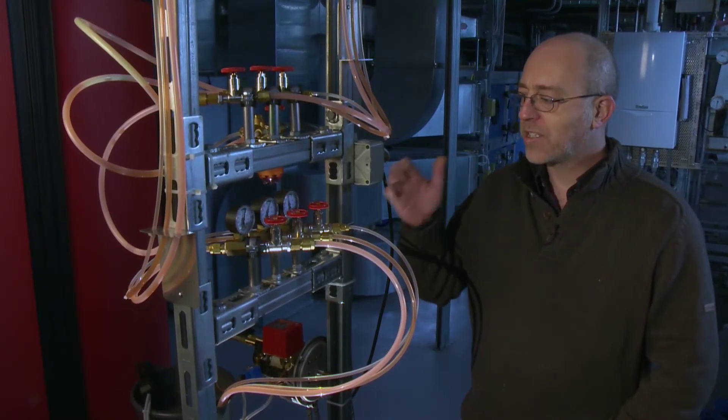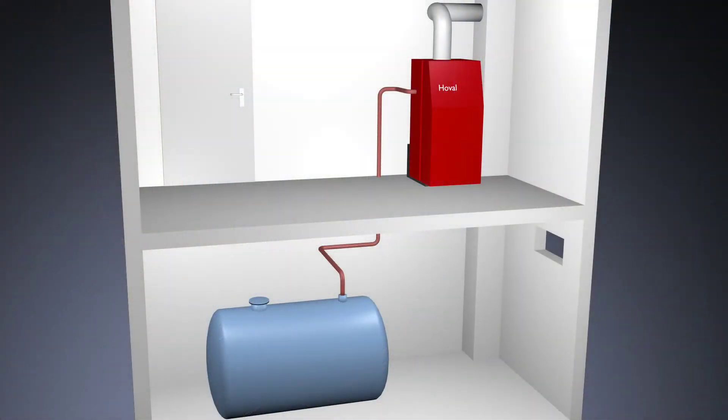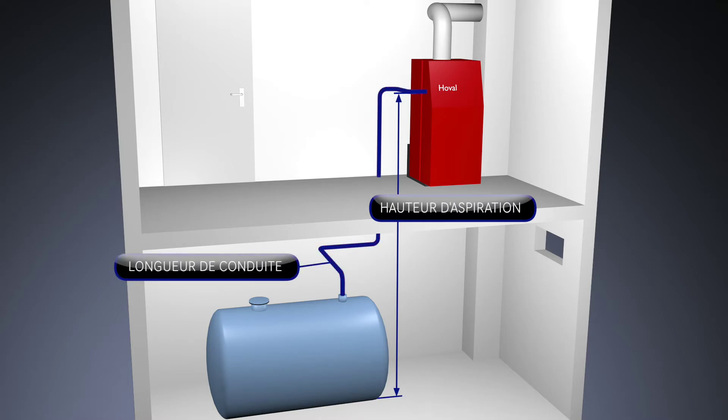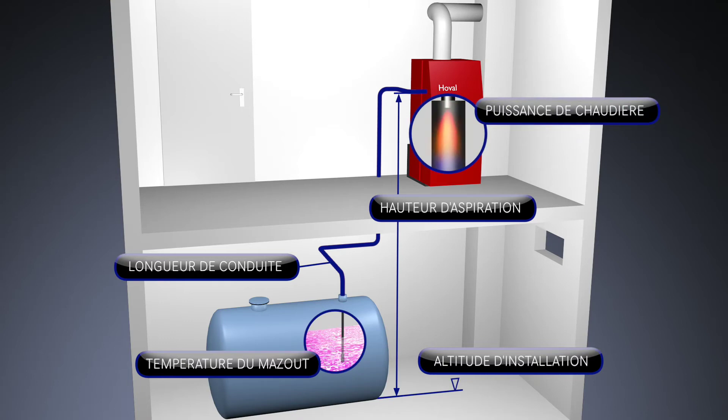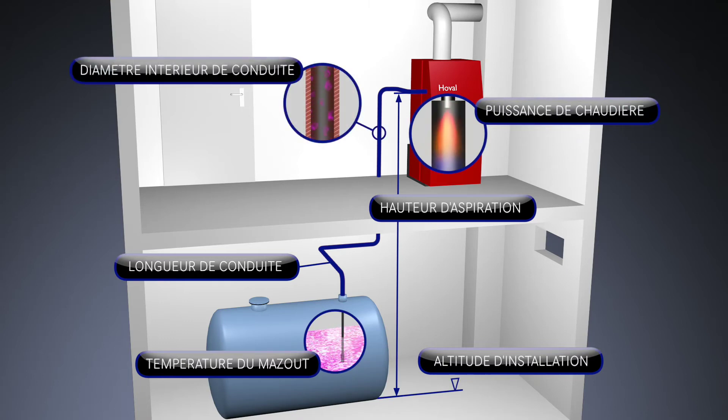Le phénomène peut donc être maîtrisé. Les six critères pour un dimensionnement correct sont donc la hauteur d'aspiration, la longueur de la conduite, la température du mazout, l'altitude de l'installation, la puissance de la chaudière et le diamètre intérieur de la conduite.